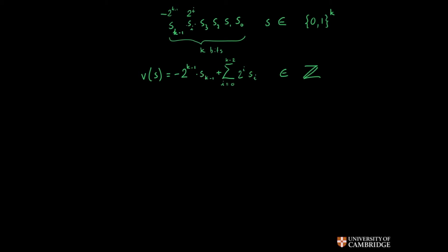If that bit is 0, there's no negative component and the value is just positive. If that bit is 1, the negative part is going to be bigger than the whole remaining sum, because that sum comes to just one less than this negative weight if all the lower bits are 1. These are the definitions, and now I want to prove that flipping all the bits of a numeral and adding 1 gives the numeral of the negative version of the original number.